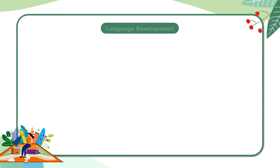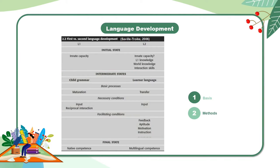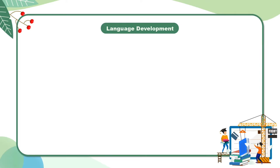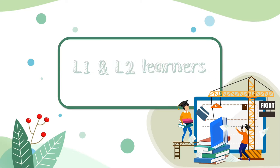We will start from the processes of language development. Here's the graph from Savio's book. This compares first and second language development in three states, which clarifies the distinctions in basis, methods, and outcomes of language development. Doughty and Long also mentioned similar concepts in their book.